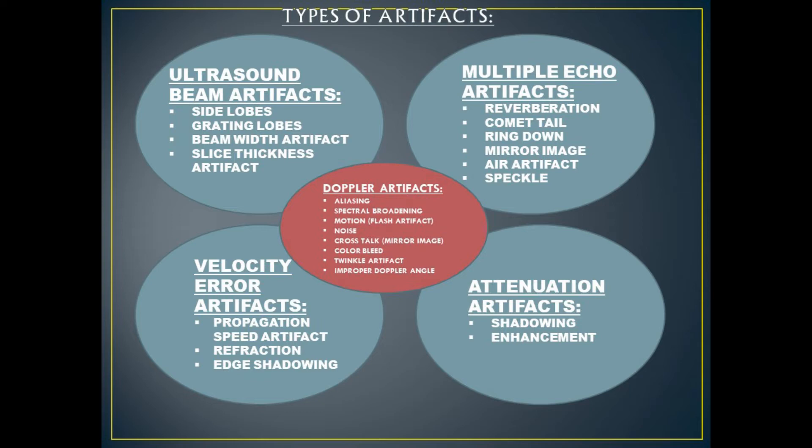Category two are multiple echo artifacts: reverberation, comet tail, ring down, mirror image, air artifact, and speckle. Category three are velocity error artifacts: propagation speed artifact, refraction, and edge shadowing.